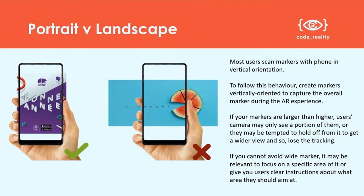Last but not least, when it comes to 2D targets, most people use phones in portrait format. So it's a good idea to have your targets in portrait orientation. If they're in landscape orientation, it requires the person to move their phone to the area of the target with the most identifiable features, and that additional effort can put people off. They may also have to step back in order to see the whole target within the field of view of the camera.